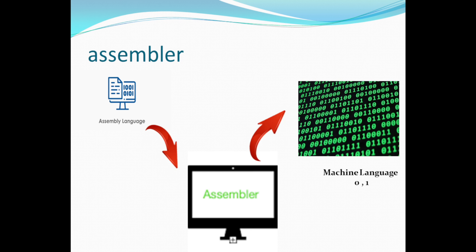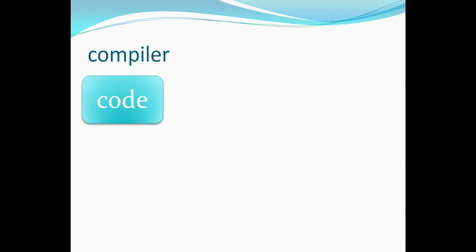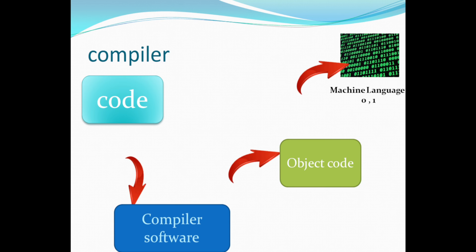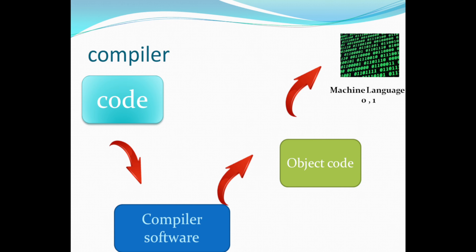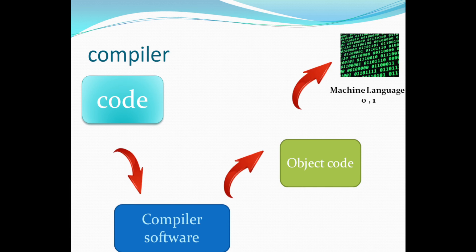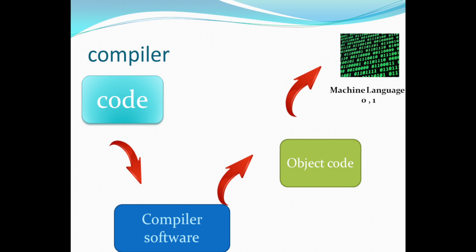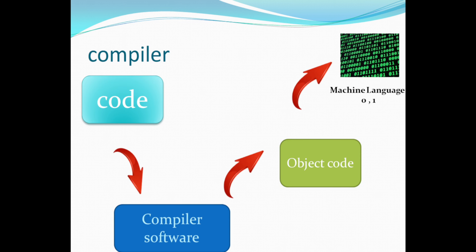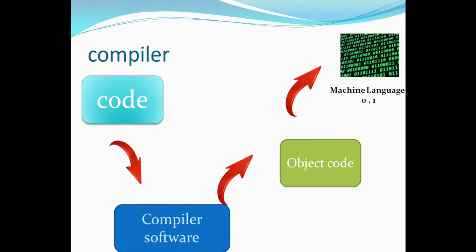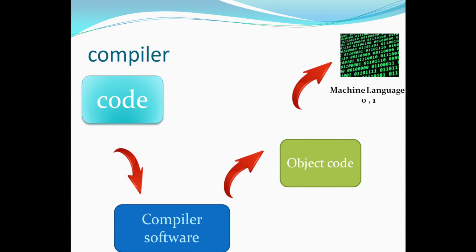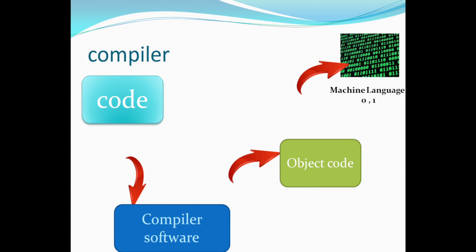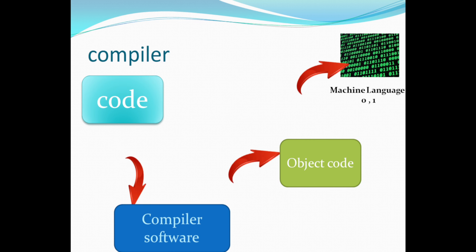We will see two programming language translators. First, compiler — in English code, we will convert to an object code. This is an intermediate code. The intermediate code will then convert to machine language. When using the compiler, whether we have 10 lines, 20 lines, or 100 lines, it will read all the lines and then give us a result.